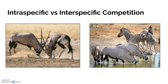Intraspecific competition is between members of the same species — for example, fighting over mates or a source of food specific to that type of organism. Interspecific competition is between multiple species, such as multiple species using the same watering hole.